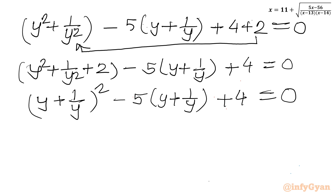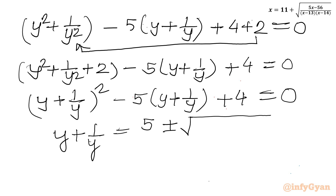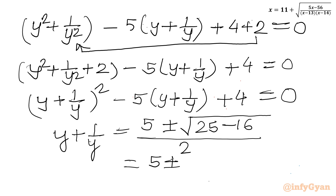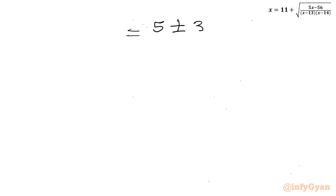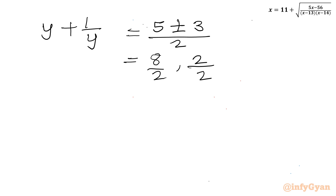So this is one quadratic equation in (y plus 1/y). Let us apply the quadratic formula for the value of y plus 1/y. Applying minus b: so minus of minus 5, plus or minus under the root of b squared (25) minus 4ac (16), divided by 2. This gives 5 plus or minus square root of 9 over 2. Square root of 9 is 3, so we get (5 plus or minus 3) over 2, giving 8/2 or 2/2. So y plus 1/y equals 4 and 1.